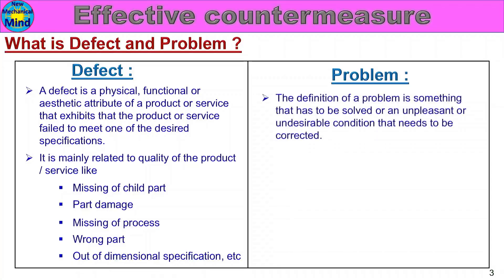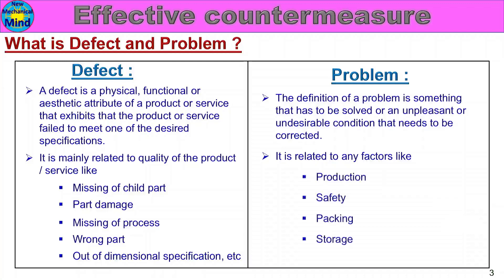Next, problem. The definition of a problem is something that has to be solved, or an unpleasant or undesirable condition that needs to be corrected — not necessarily a quality defect. A problem can be related to production, safety, packing, storage, or transport issues. So, problem is something undesirable or inconvenient. Now the difference between defect and problem is clear.